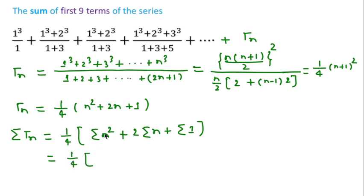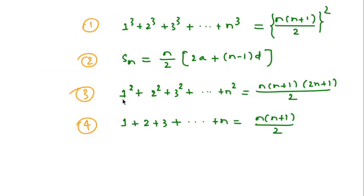Sigma of n² means sum of n² from 1 to n is n(n+1)(2n+1)/6, and sum of natural numbers from 1 to n is n(n+1)/2. So using these two formulas we can write here...